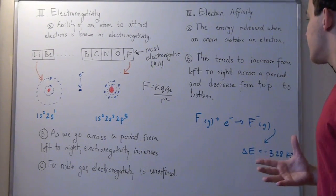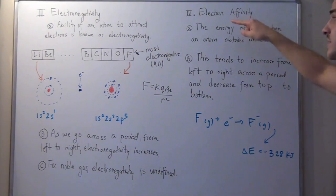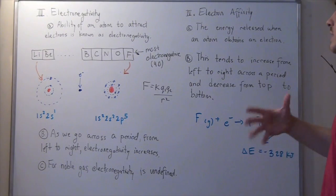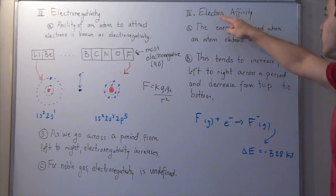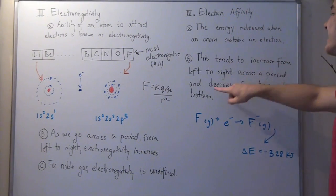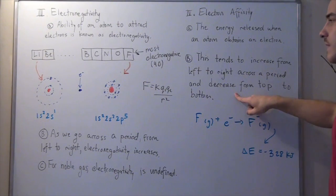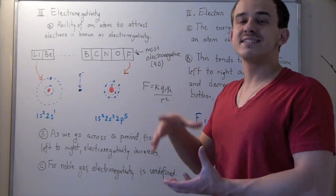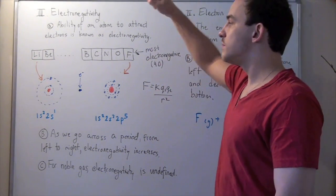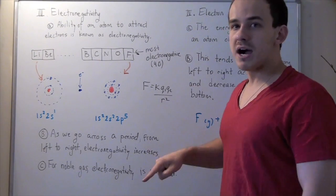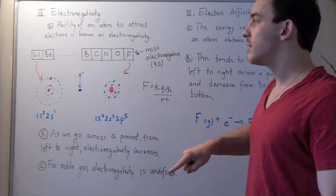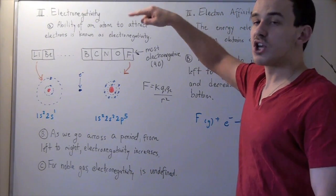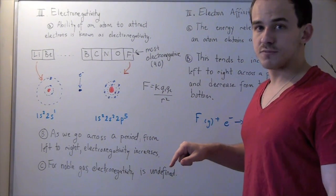Likewise, as we go from top to bottom in any group on the periodic table, our electron affinity decreases. That's because our atomic radius increases as we go from top to bottom, so we go from exothermic reactions to endothermic reactions.